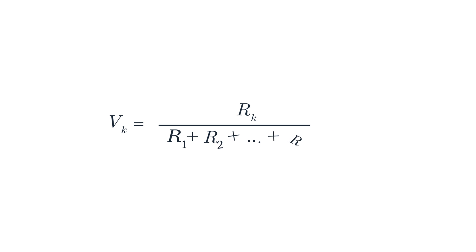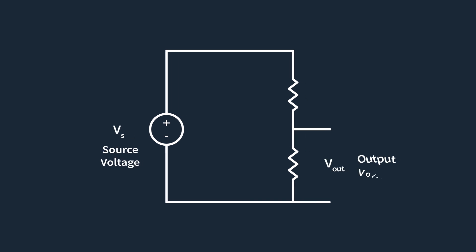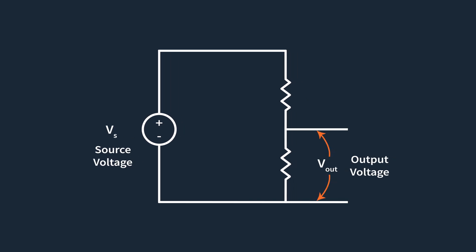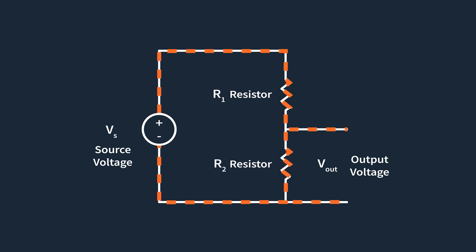To generalize, for a series combination of n resistors, the voltage drop V sub k across the kth resistor is proportional to the individual resistance compared to the total resistance of the series circuit — whether you have two resistors or two thousand. We can now apply this specifically to a voltage divider. A voltage divider is a simple yet powerful circuit that uses this principle to reduce a higher voltage to a lower one using only two resistors. It is commonly used to reduce the voltage for devices that require lower operating voltages, such as sensors or microcontrollers.